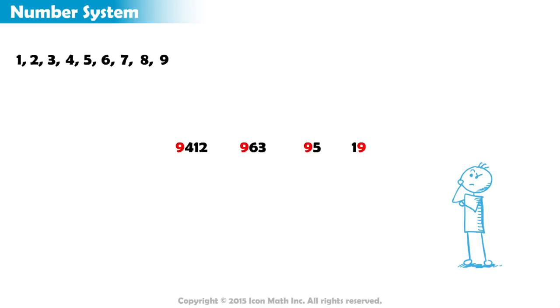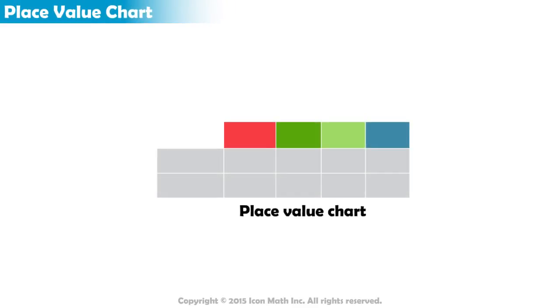Each digit will have a different value depending on its position in the number. We use a place value chart to show the position and value of each digit in the number. We go from right to left and we start with the ones place.